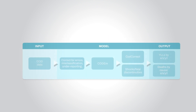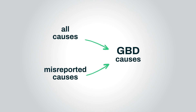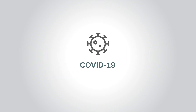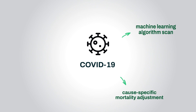Next, we clean and prepare the data for modeling. Causes are mapped to the 292 causes we estimate, and vague or misreported causes of death are redistributed to our causes systematically. COVID-19 caused a major disruption in deaths globally, and many COVID-19 deaths were misclassified as a result. We needed to develop a special adjustment to capture missing cases of COVID-19. We used a machine learning algorithm to scan for any unusual spikes in deaths from other diseases during the pandemic. We then determined whether each spike was due to COVID-19 or a true increase in cause-specific mortality, and adjusted the estimates, reassigning a portion of that excess mortality to COVID-19.